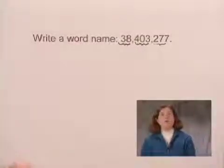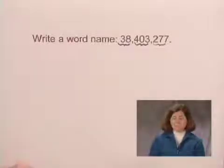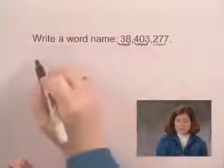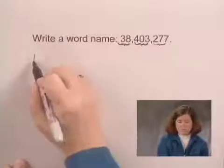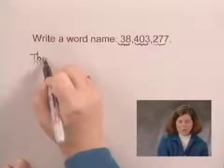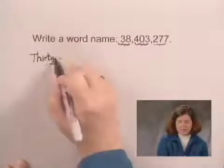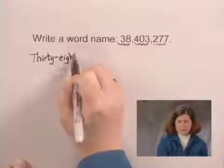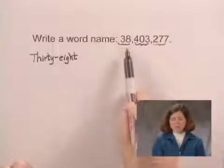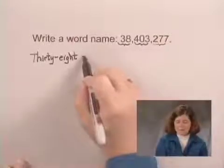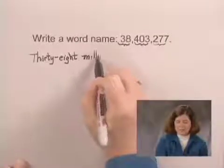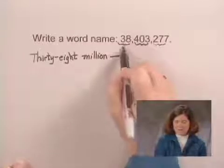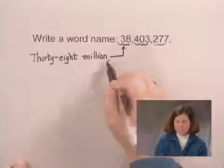To write a word name, we look at the number inside each period. The first one is 38. We write the number 38, and then we write the period name — million — and put a comma.